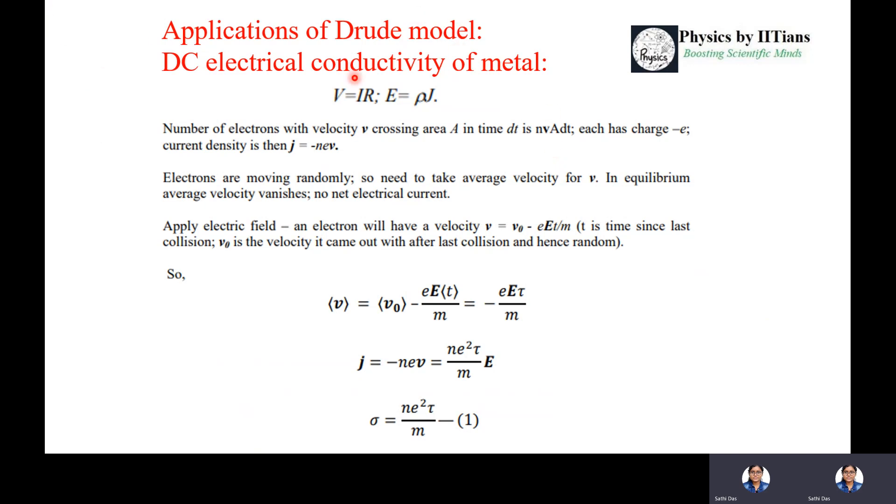Let's take an application of the Drude model: DC electrical conductivity of metal. We know Ohm's law: V = IR, or we can write E = ρj. The number of electrons with velocity v crossing area A in time dt is n·v·A·dt. Each has charge -e, so current density j = -nev.